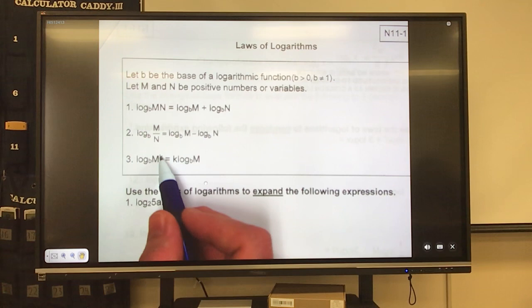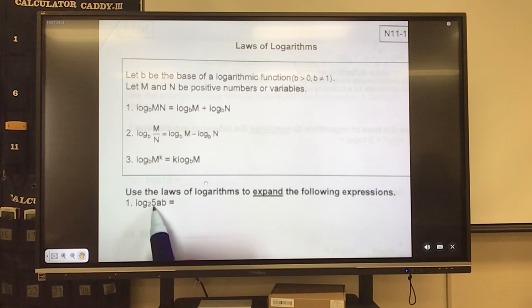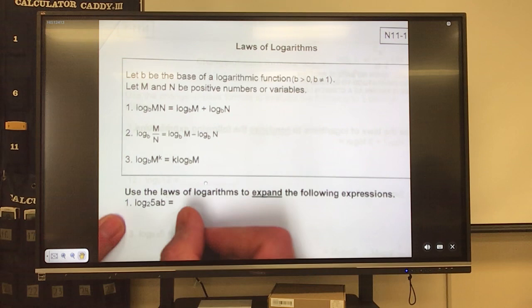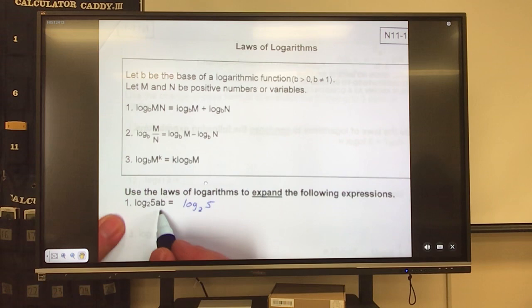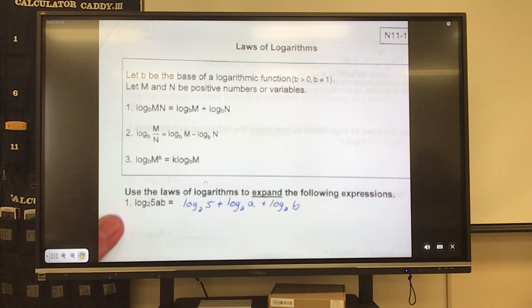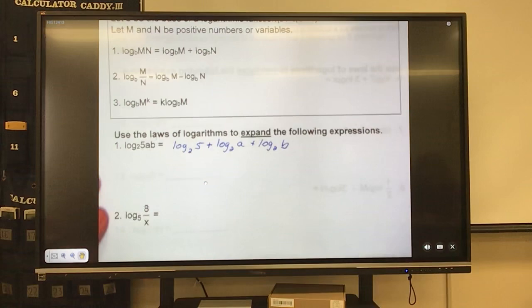So this guy here, clearly we have multiple things that are touching each other, so that means 5 is being multiplied times a times b. So how many logs am I going to write down? If there's three things being multiplied, three different logs. So if I'm expanding, this would be log base 2 of 5, and because it's multiplication, to break them apart I use addition, plus log base 2 of a, plus log base 2 of b. So I just took and I expanded this guy to this guy.